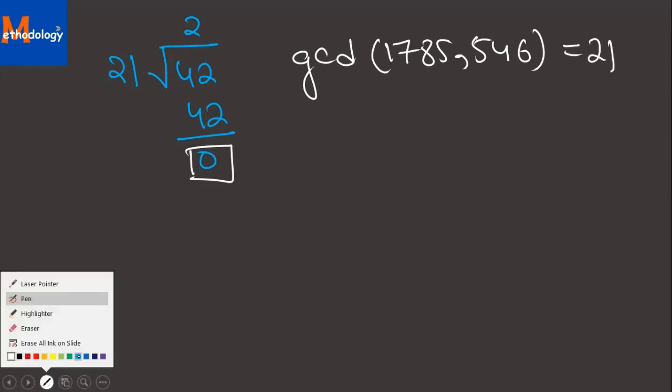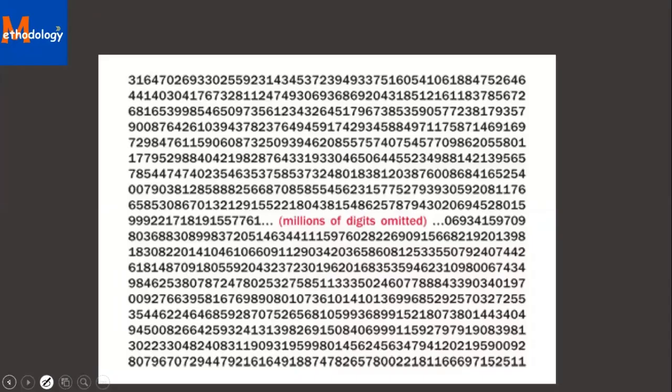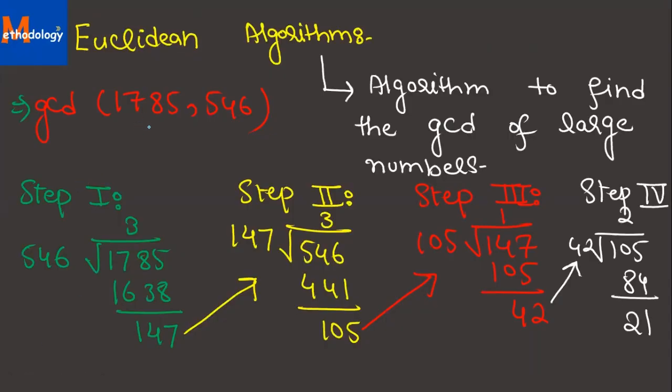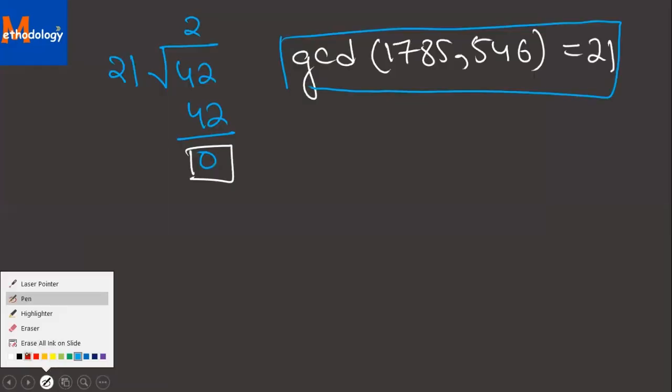This is a very simple and efficient way of finding the GCD. Step number 1: larger number is dividend, smaller number is divisor. Divisor of first step becomes the dividend of second step, and the divisor of second step is the remainder of the first. This process goes on. Is it clear to everyone?